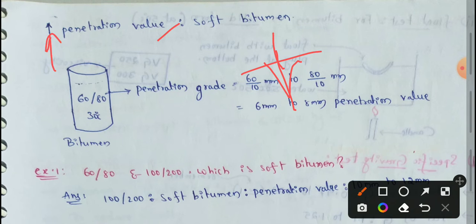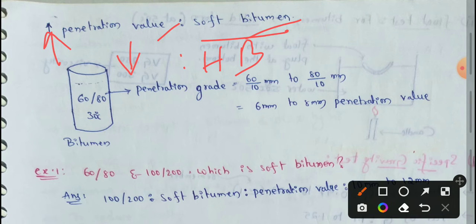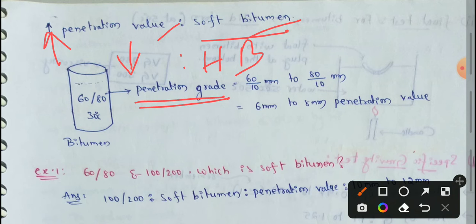If the penetration value is higher, that bitumen is soft. If the penetration value is lower, that bitumen is hard. So a higher penetration value means softer bitumen, and a lower penetration value means harder bitumen. For example, grades like 60/80 represent a range.